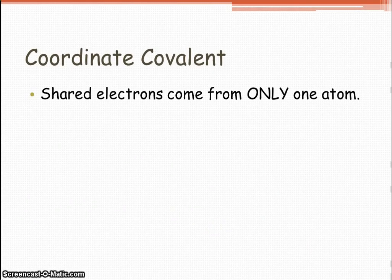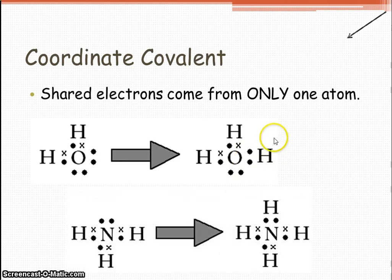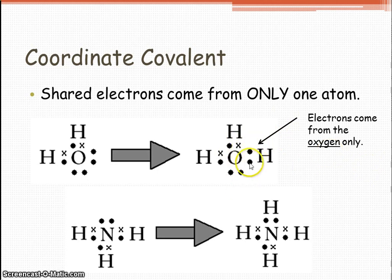So let's go over coordinate covalent. That's just when shared electrons come only from one atom. And so, over here, the difference between the two pictures. Well, the unshared pair of electrons of oxygen, we have this unshared pair. What happens is, maybe an H+, which has no electrons, will come along and attach itself. And so, the electrons have only come from the oxygen, over here. And then down here, we have this unshared pair of electrons from the nitrogen. And so, we'll have maybe another H+, that has no electrons, come and attach itself to the unshared pair of electrons.